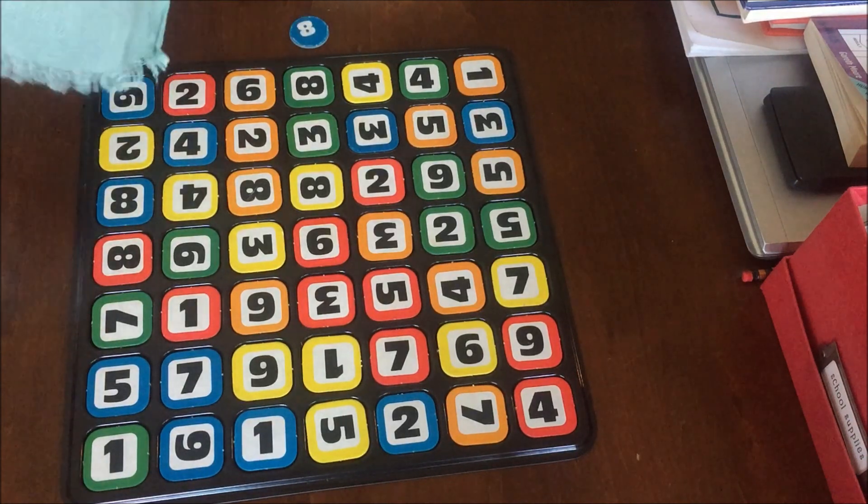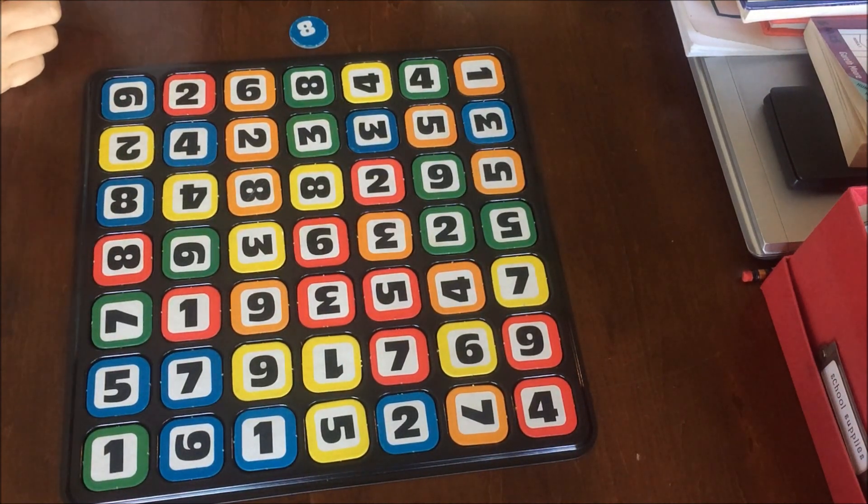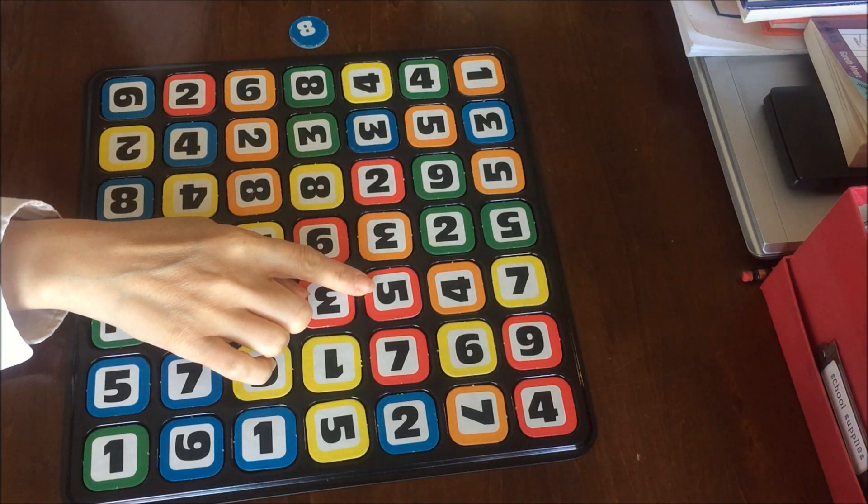First, I'm going to show you how to play it, though. So I just showed you the tile that has the number 8 on it, and we are going to try to find a combination of numbers that are going to make 8, in which the first two numbers need to be multiplied, and the last number is either added or subtracted.